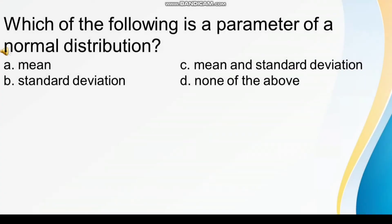Which of the following is a parameter of a normal distribution? A. Mean, B. Standard Deviation, C. Mean and Standard Deviation, D. None of the above.